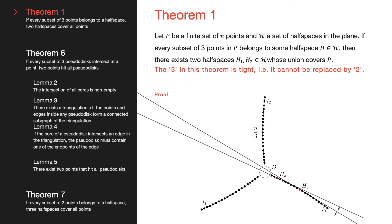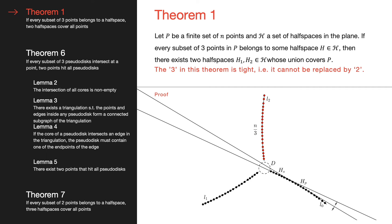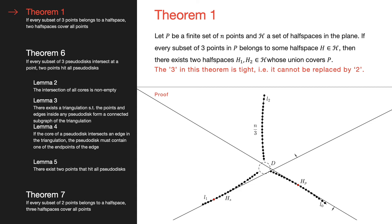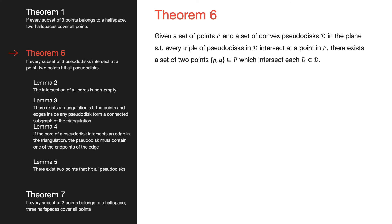Now we prove that two half-planes do not cover all points. If the two half-planes are tangent to the same arc, both will not cover any points from the arc counterclockwise to the one they are tangent to. If the two half-planes are tangent to different arcs, the point that defines the tangent half-plane to the counterclockwise arc is not contained in either half-plane.